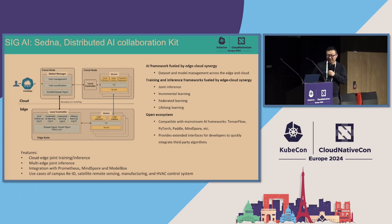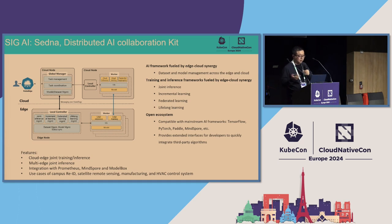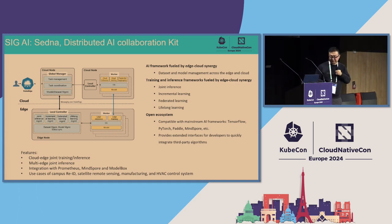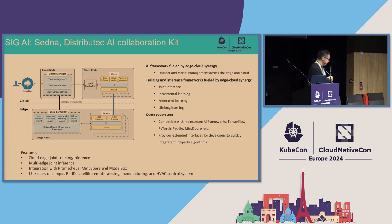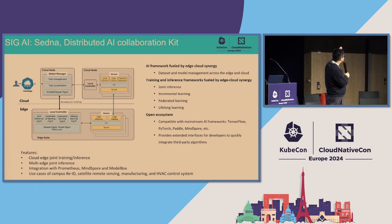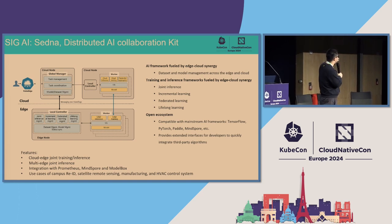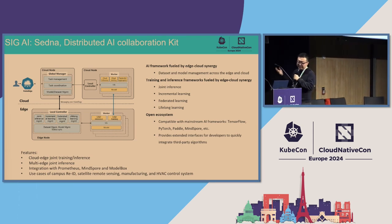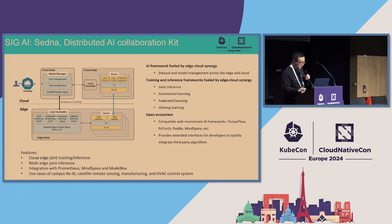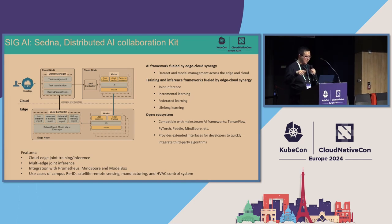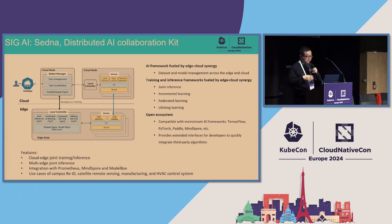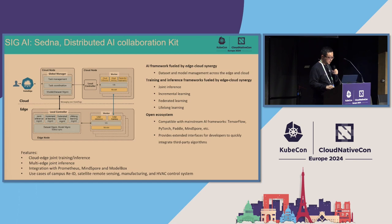Another subproject is Sedna, which focuses on edge AI. Sedna is built on top of the KubeEdge project and supports cloud-edge joint training and inference, as well as edge-to-edge joint inference. It can integrate with other AI frameworks. To use Sedna, you integrate its plugin into your AI application to enable cloud-edge synergy and edge-to-edge synergy for model transmission and similar tasks.